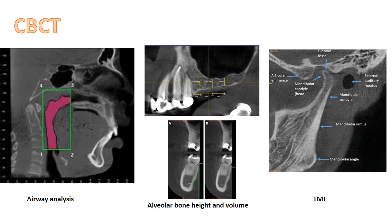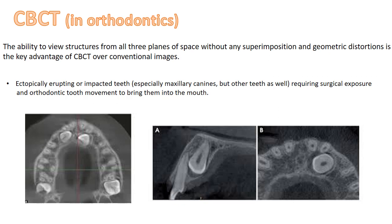CBCT can be used for airway analysis, assessing airway volume and shape. It can also be used for assessing alveolar bone height and volume, especially when placing a dental implant — measuring the height and volume of bone for implant placement. It is also used for TMJ viewing, which aids in the diagnosis of the temporomandibular joint.